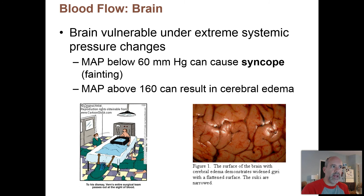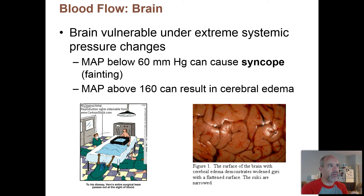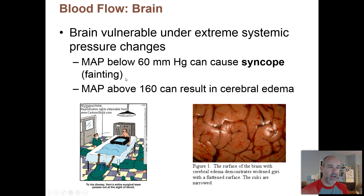Let's talk about blood flow to the brain, because the brain is critical. You have to be extremely careful about blood flow to the brain. If mean arterial pressure — your average arterial pressure — drops below 60 millimeters of mercury, that's pretty low blood pressure and can cause syncope, which is another name for fainting, because you're not getting adequate oxygen to the neurons in the brain, lowering brain function.